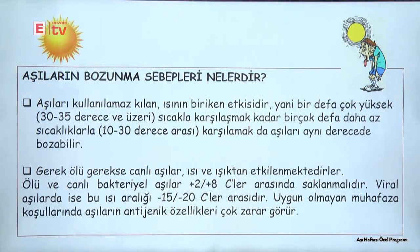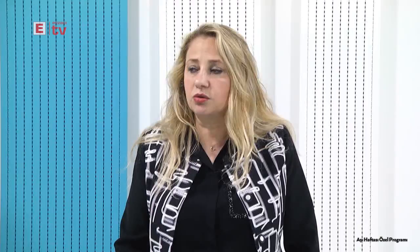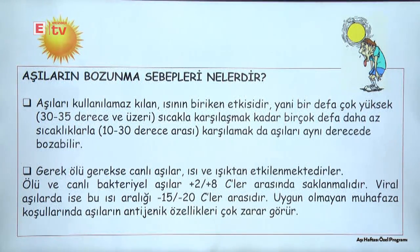Aşıların bozulmasına en çok sebep olan etken ısı etkisinin birikmesidir. 30-35 derecenin üzerinde defalarca kalması veya 10 ila 30 derecenin altında defalarca kalması, yani ısı birikimi sonucu aşılarda bozulmalar meydana gelmektedir. Gerek ölü aşı olsun gerekse canlı aşılar olsun, ısı ve ışıktan etkilenmeleri söz konusudur.